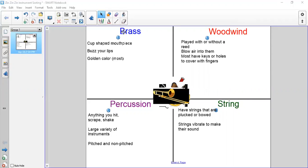We have the brass family, which has instruments that all have the same characteristics but they might look a little different. All of the brass instruments have a cup-shaped mouthpiece. You press your lips against them and you buzz to make their sound, and most of them are gold in color. They're made out of brass.